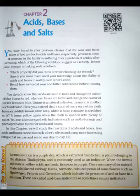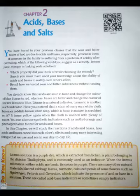Questions: 1. Why should curd and sour substances not be kept in brass and copper vessels? 2. Which gas is usually liberated when an acid reacts with a metal? Illustrate with an example. How will you test for the presence of this gas? 3. Metal compound A reacts with dilute hydrochloric acid to produce effervescence. The gas evolved extinguishes a burning candle. Write a balanced chemical equation for the reaction if one of the compounds formed is calcium chloride.